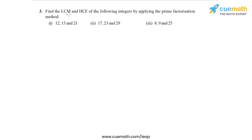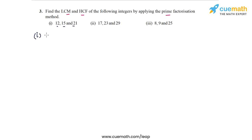In question 3, we have to find the LCM and HCF of each of these sets of three integers using prime factorization. Let's start with the first set of integers which is 12, 15 and 21. These are small numbers and we can prime factorize them directly without having to build factor trees.